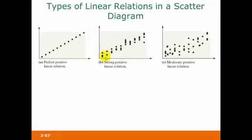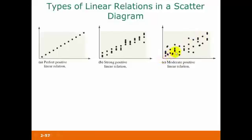These two would also both be linear relationships and positive linear relationships. This one would be a fairly strong linear relationship because the straight line pattern is fairly obvious. In this one, the data points are much more spread out and the straight line pattern is not as strong, so we would call this a moderate positive linear relation.